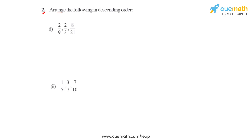Question number 2 says to arrange the following in descending order — that is, we have to start with the largest value and go on to the smallest value. For the first part, we have three fractions: 2 over 9, 2 over 3, and 8 over 21. These three fractions have different denominators, so they are unlike fractions. Our first objective will be to convert them into like fractions by giving all three the same denominator.